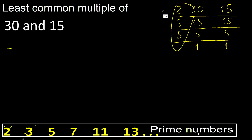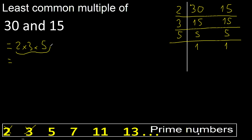Here, multiply: 2 × 3 = 6, 6 × 5 = 30. Ok.